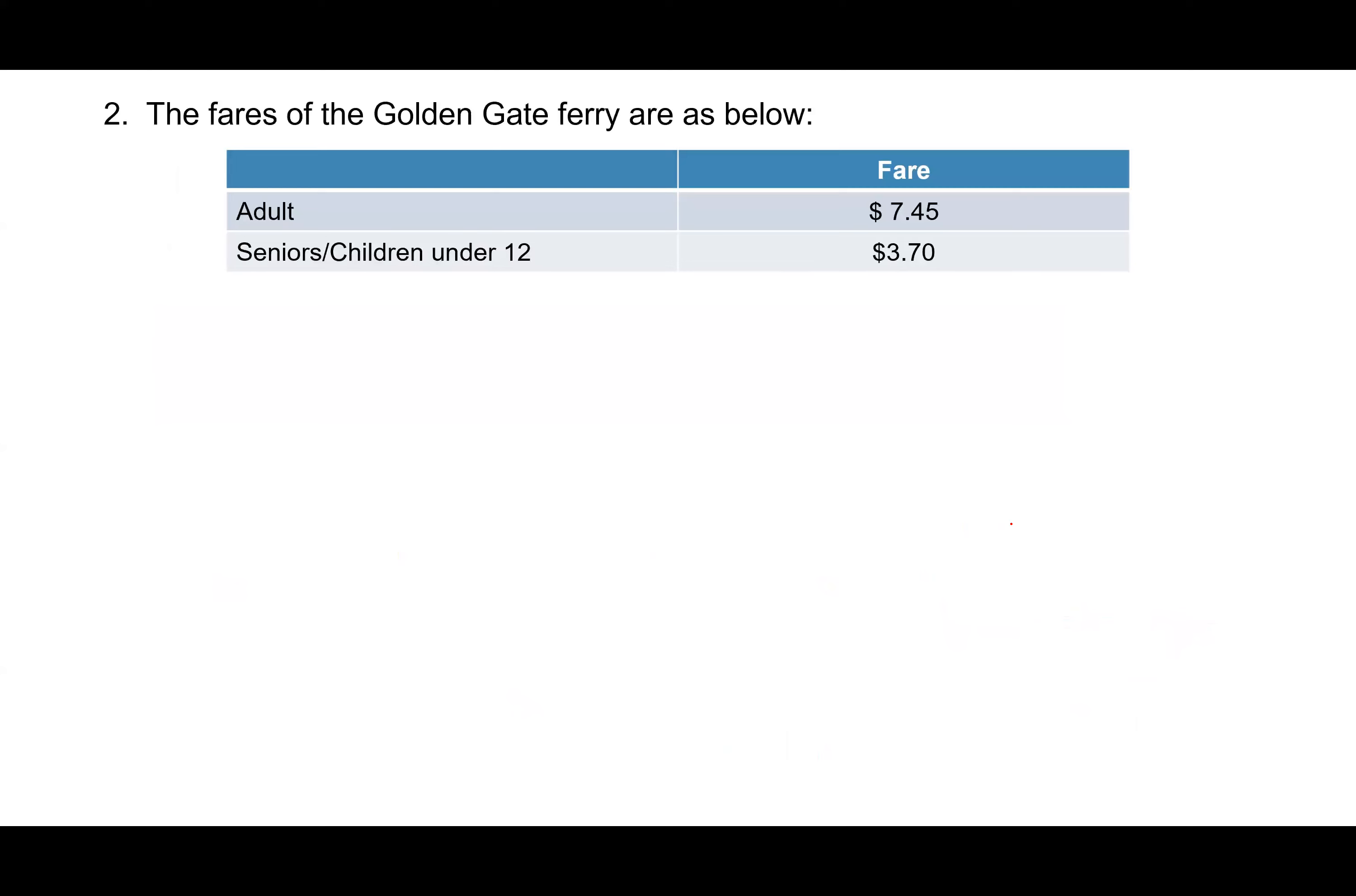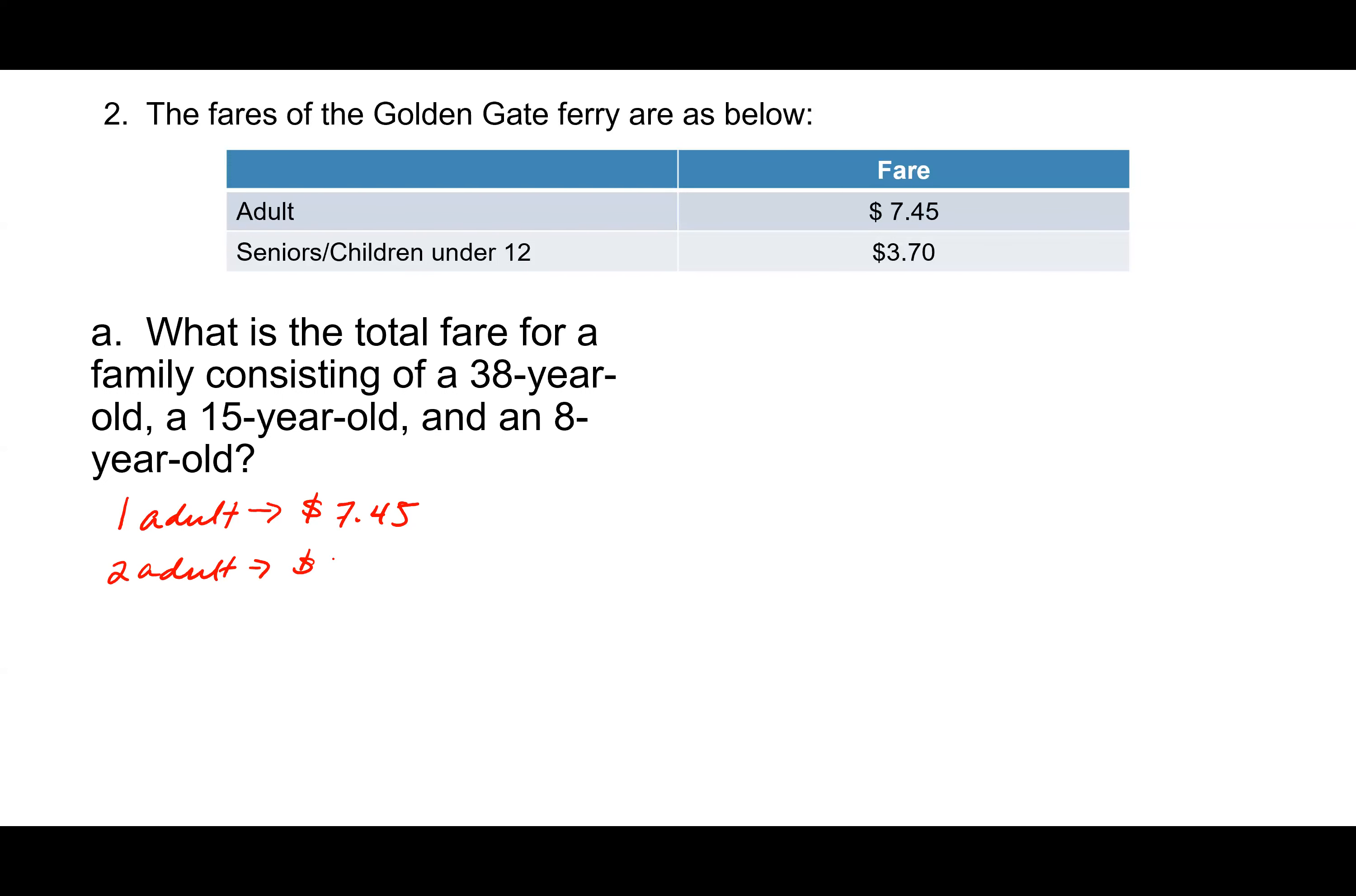Fares of the Golden Gate Ferry are as shown below. Letter A says, what is the total fare for a family consisting of a 38 year old, a 15 year old and an eight year old? Notice seniors and children under 12 are one fare and then adults are another fare. Nora, why don't you tell me how you solve this one? So I did, for the two adults, I did $7.45 times two, which is $14.90. And then I did $14.90 plus $3.70 because that's one child. And you got $18.60. Nice job. That is correct.